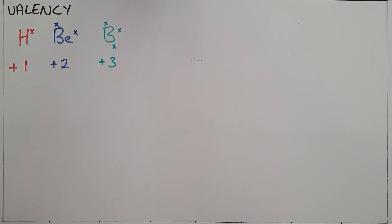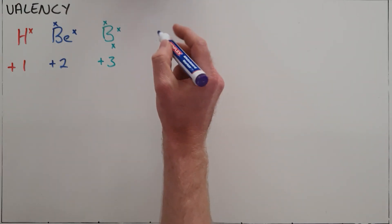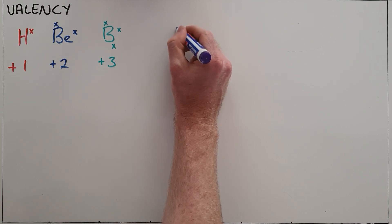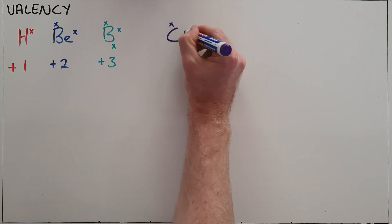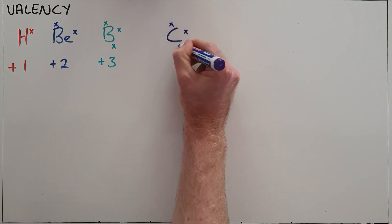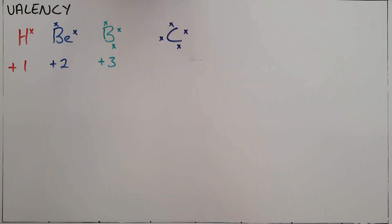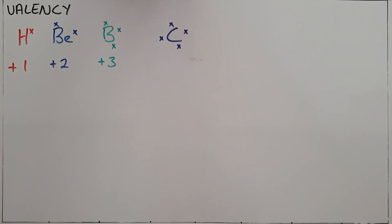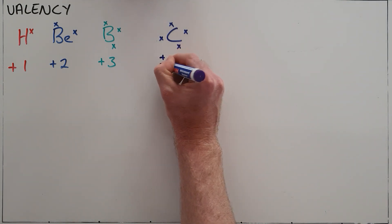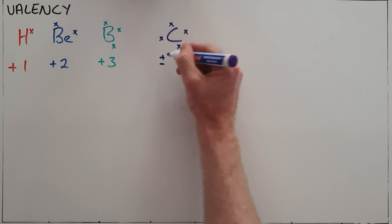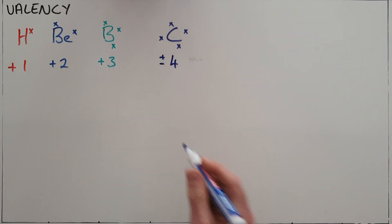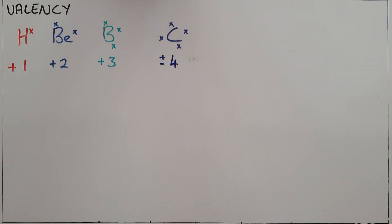The same goes for elements in group four of the periodic table — they have four valence electrons. Elements in group four can technically either gain or lose four electrons in order to obtain a full valence shell. So we often say that it has a charge or a valency of either plus or minus four, but either way that valency number is four.